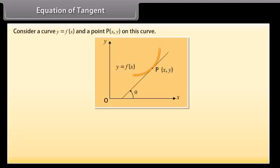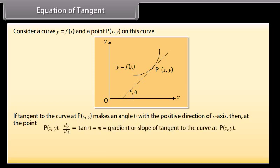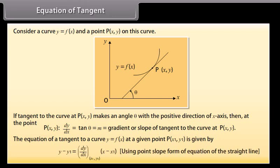Consider a curve y = f(x) and a point P(x, y) on this curve. If the tangent to the curve at P(x, y) makes an angle theta with the positive direction of the x-axis, then dy/dx = tan(theta) = m = gradient, or slope of tangent to the curve at P(x, y). The equation of a tangent to a curve y = f(x) at a given point P(x₁, y₁) is given by y − y₁ = (dy/dx at x₁,y₁) · (x − x₁), using the point-slope form of the equation of a straight line.